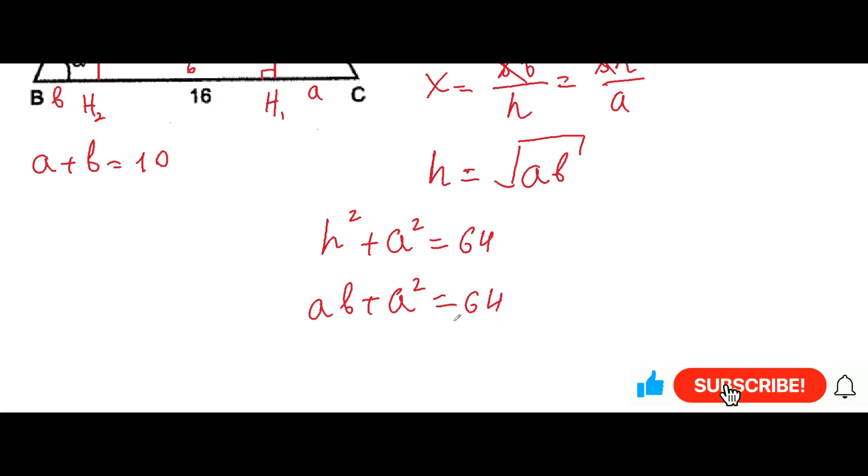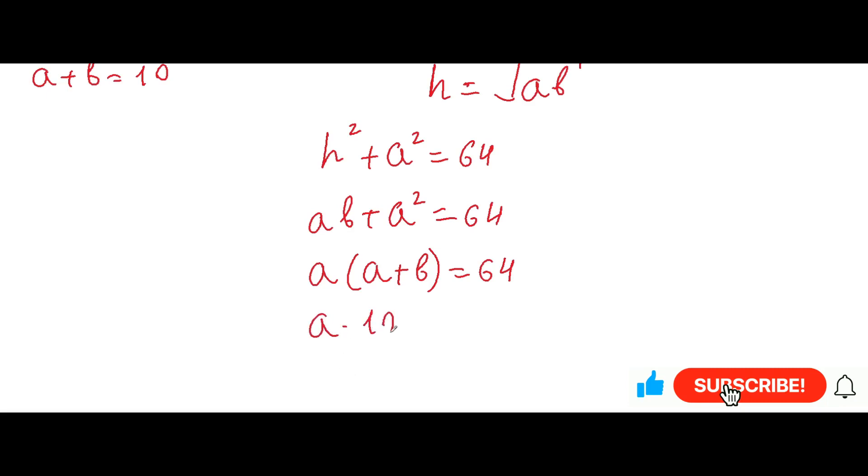See this beautiful thing. Here we can take out from the brackets a, which means that a plus b is given here. We found it. So a times 10 will be equal to 64. So a will be equal to 6.4.